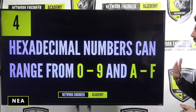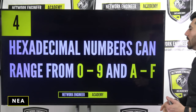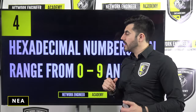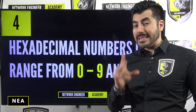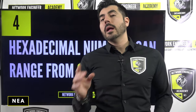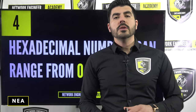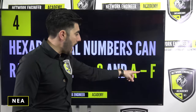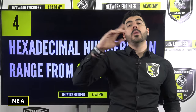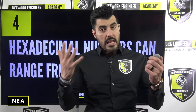Now that we're talking about hexadecimal numbers and octets: with hexadecimal numbers, we use decimal numbers from zero all the way to nine, and then we use letters from A all the way to F. A equals 10, B equals 11, C equals 12, all the way to F equals 15.